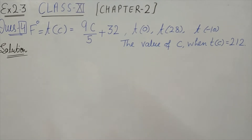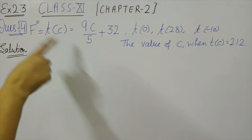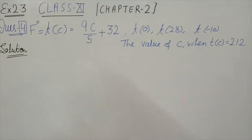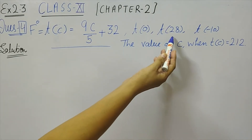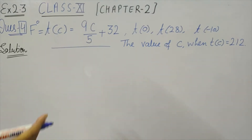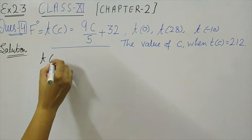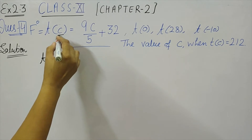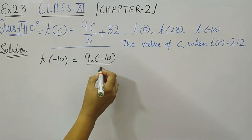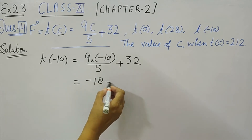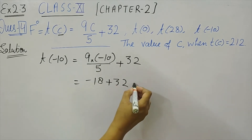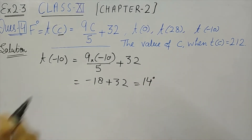In question 4, an expression is given to convert temperature from degrees Celsius into degrees Fahrenheit. We have to calculate t(0), t(28), and t(−10). I am taking t(−10): in place of C we write −10. So 9×(−10)/5 + 32 = −18 + 32 = 14 degrees Fahrenheit.